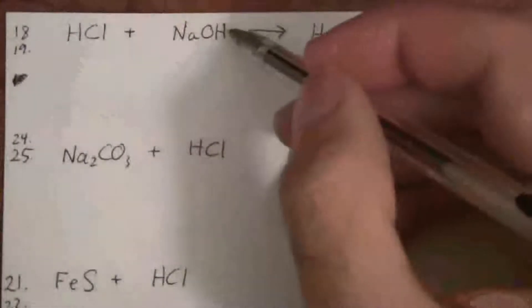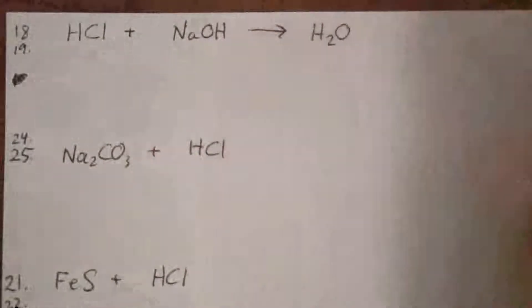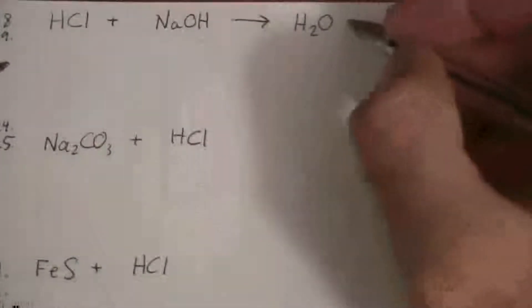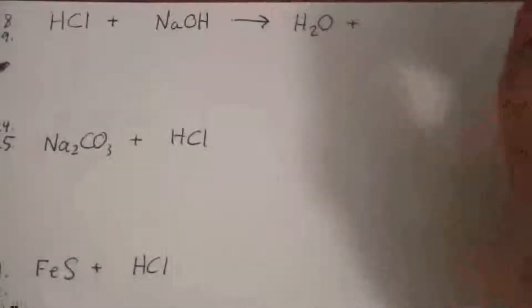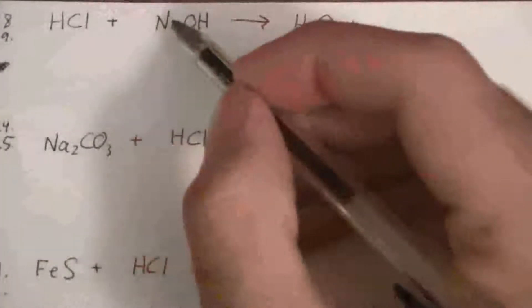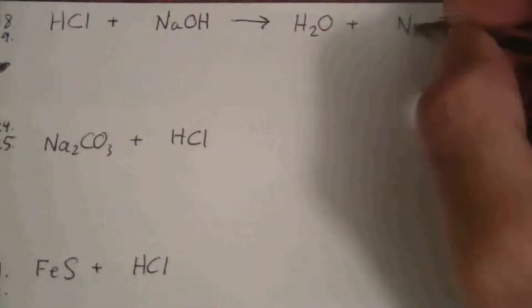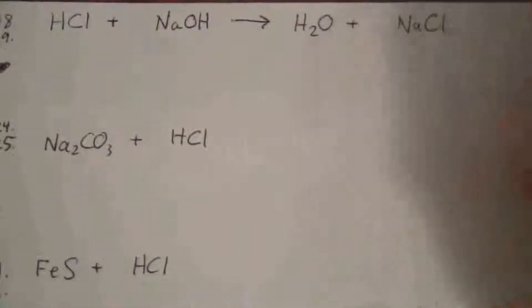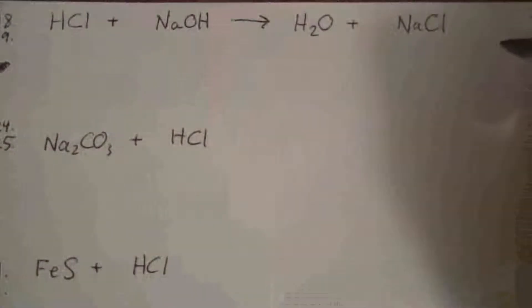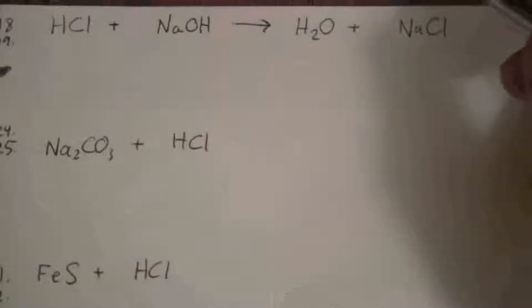Hydroxide is a negative one, hydrogen is a positive one, so we get our water. And then we have NaCl — so there is the reaction. Of course, you have to put in the subscripts.